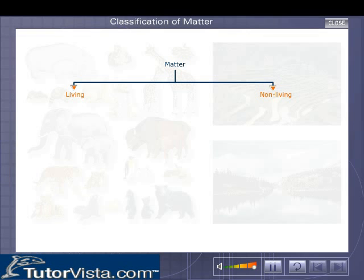The living things may be classified into plants and animals. The non-living things may be classified as homogeneous substances or heterogeneous substances.